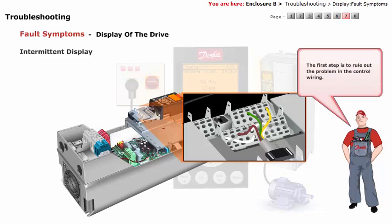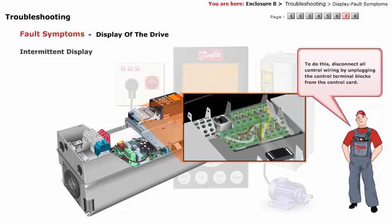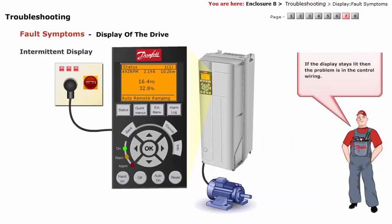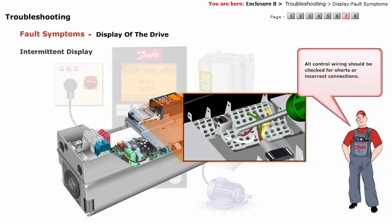The first step is to rule out the problem in the control wiring. To do this, disconnect all control wiring by unplugging the control terminal blocks from the control card. If the display stays lit, then the problem is in the control wiring. All control wiring should be checked for shorts or incorrect connections.